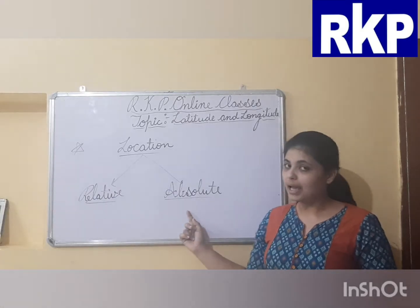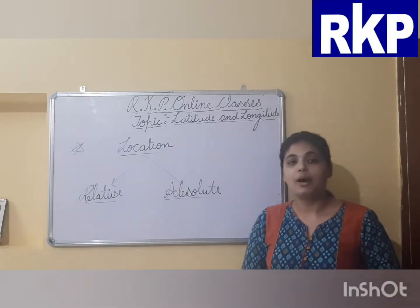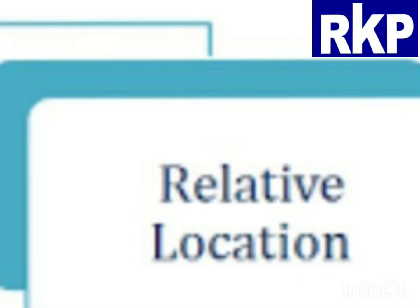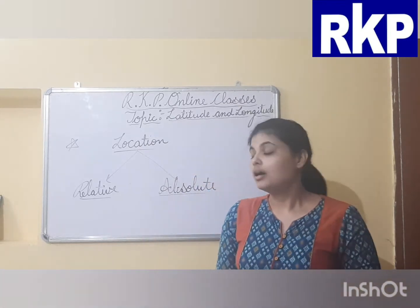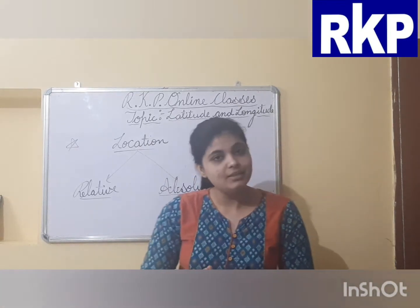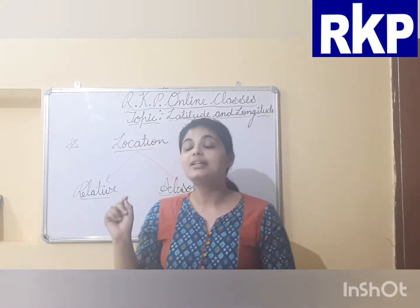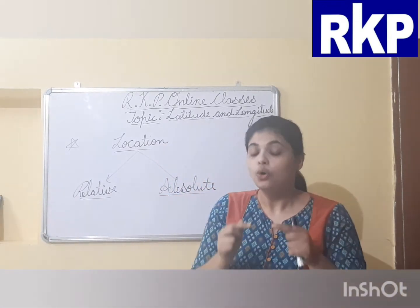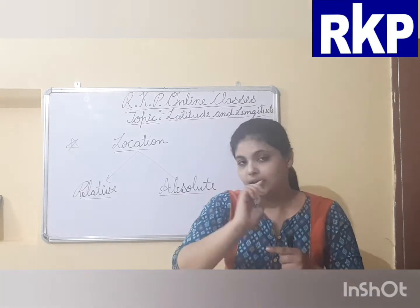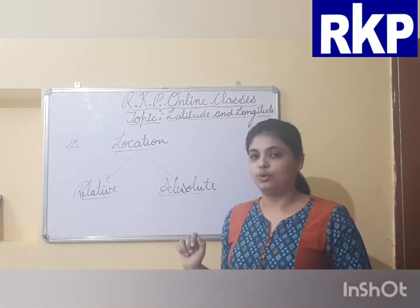One is relative location and second is absolute location. Relative location means if we are describing the position of any place in relation to another place — if we are describing the position of any place on the earth in relation to another place — that is known as relative location.